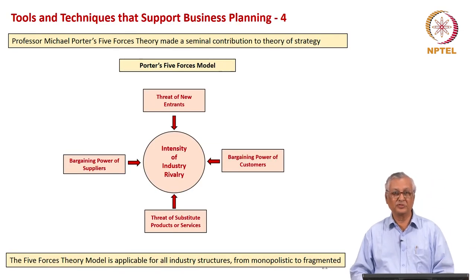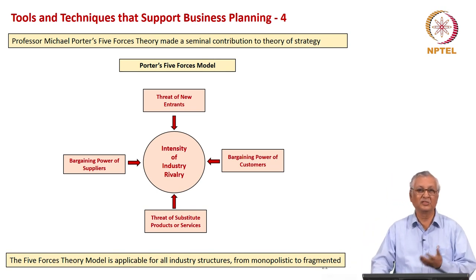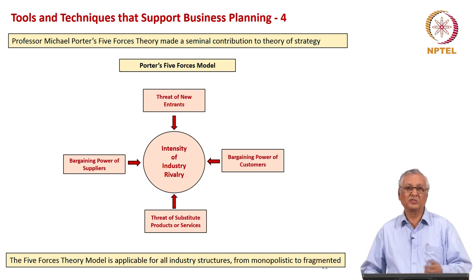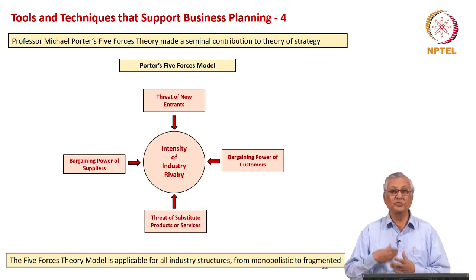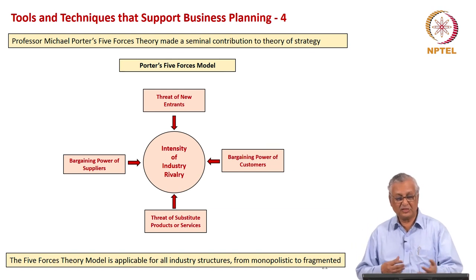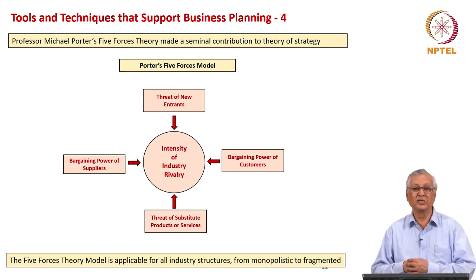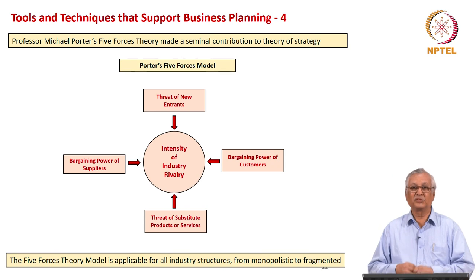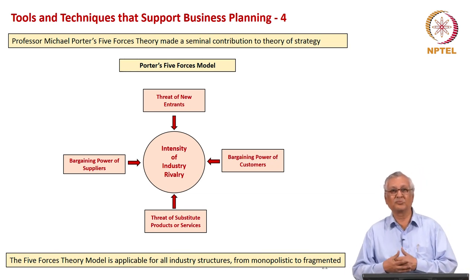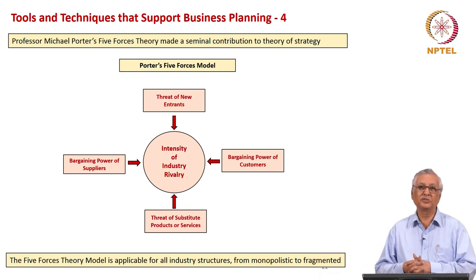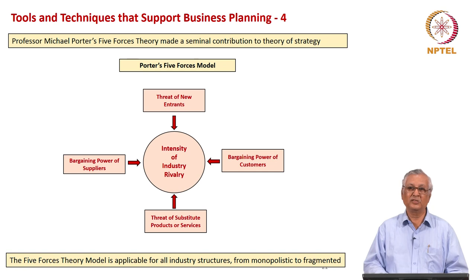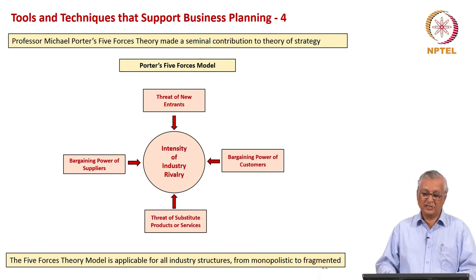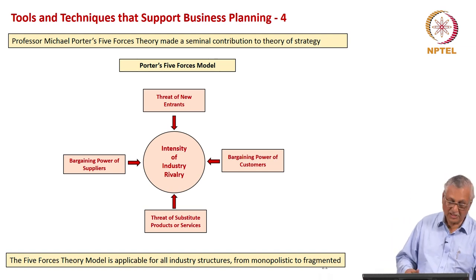Another tool is Porter's 5 Forces model, which talks about the threat of new entrants, bargaining power of customers, threat of substitute products or services, and the bargaining power of suppliers. From a spectacle manufacturer's perspective, the threat of new entrants could be the smart spectacle entering the market. But from the smart spectacle company's viewpoint, there is no such threat. So while this model is good, you need to adapt and contextualize it to your specific requirement. Also, from the time this model was first prescribed around 1980, today's situation is completely different. Economic forces operating in the world order now dictate industrial forces in a much more differentiated and impactful manner.